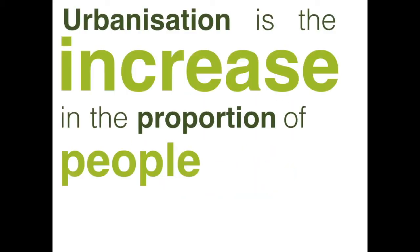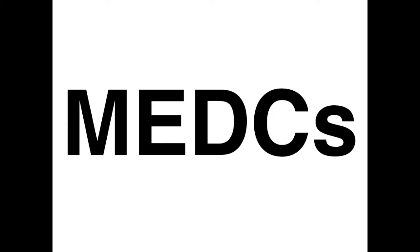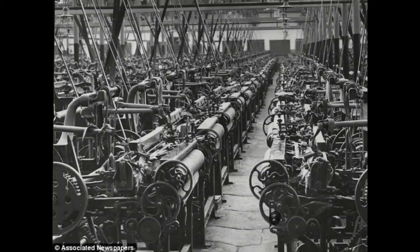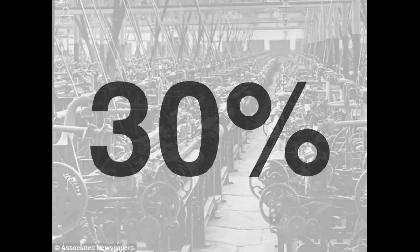Urbanisation is the increase in the proportion of people living in towns and cities. Prior to the 1950s, the majority of urbanisation occurred in MEDCs. Rapid urbanisation took place during the period of industrialisation in Europe and North America in the 19th and early 20th centuries. Many people moved from rural to urban areas to get jobs in the rapidly expanding industries in many large towns and cities. By 1950, 30% of the world's population lived in urban areas, and by 1990, this had increased to 51%.